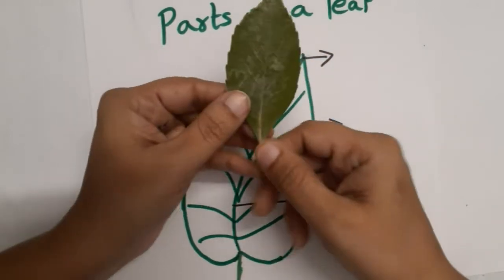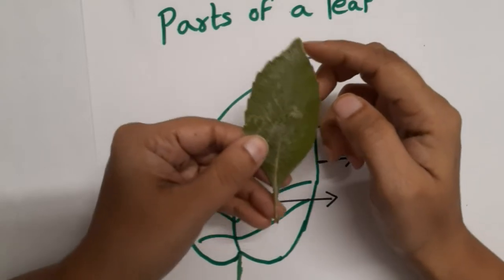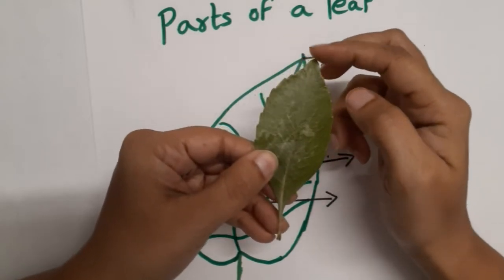This is the tip of the leaf, which is known as the apex.